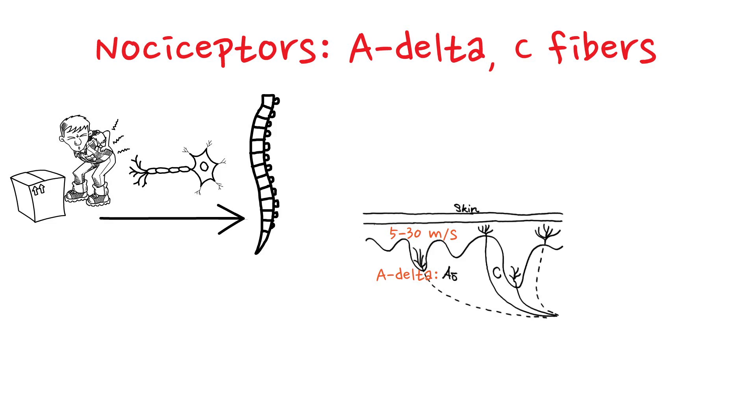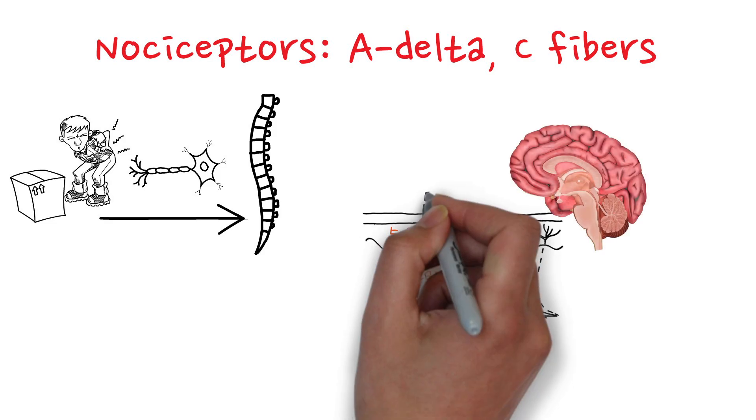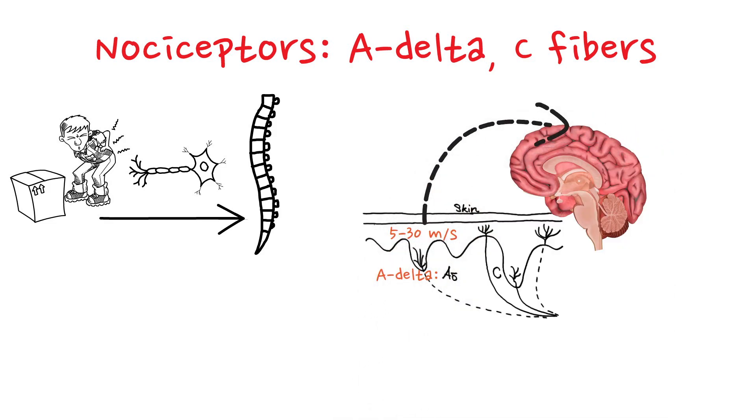This rapid conduction allows A-delta fibers to transmit sharp, acute and well-localized pain, often described as fast pain. A-delta signals go to motor and sensory areas in the brain. This suggests that these signals receive special attention so that we can respond to them quickly.